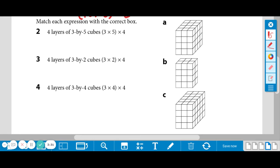Four layers of 3 by 5 cubes. So the expression is 3 times 5 times 4. So we want to look, and if we look, all of these actually have four layers. So that's really not helpful to us. We need to figure out the dimensions of the layers.